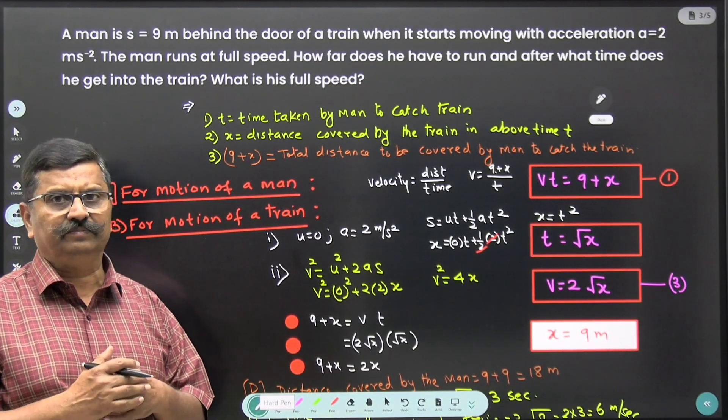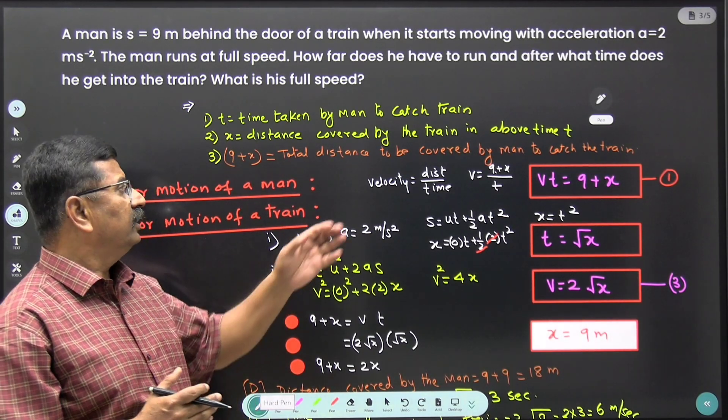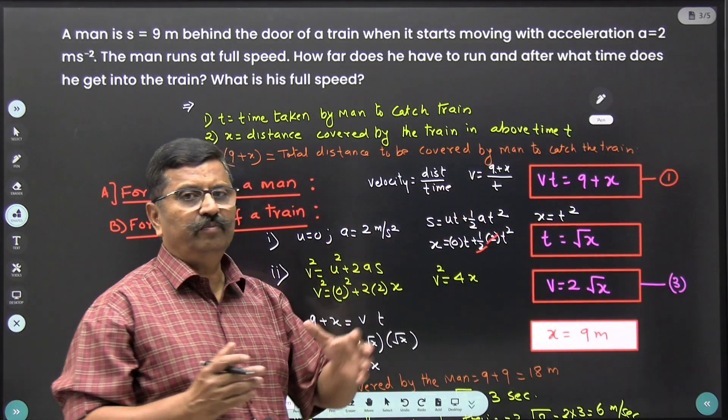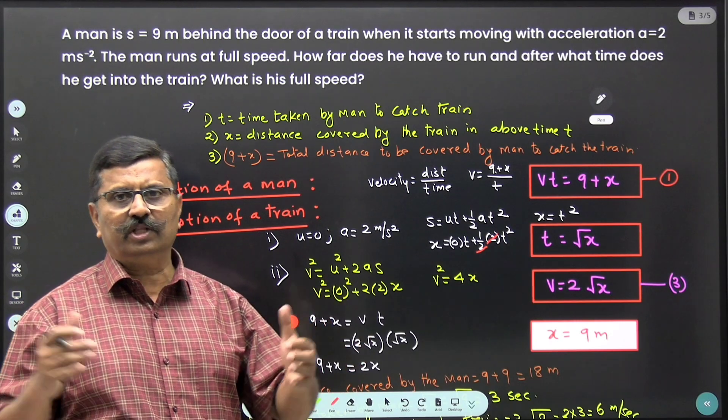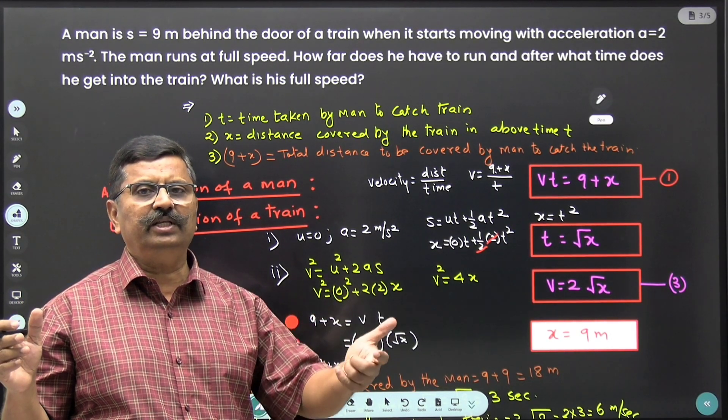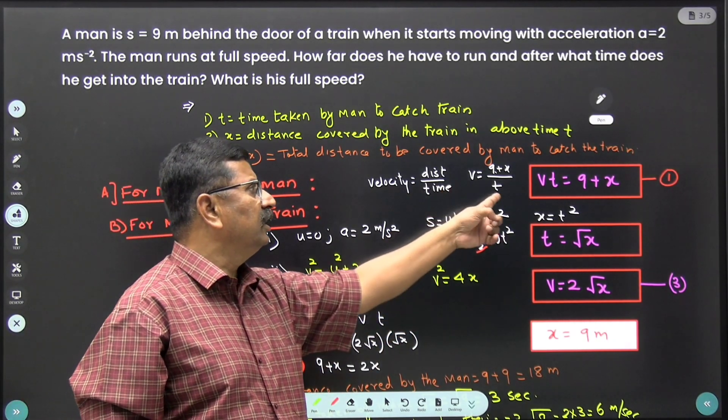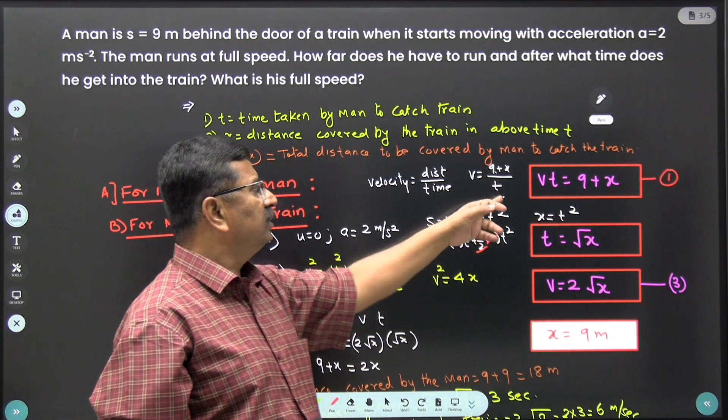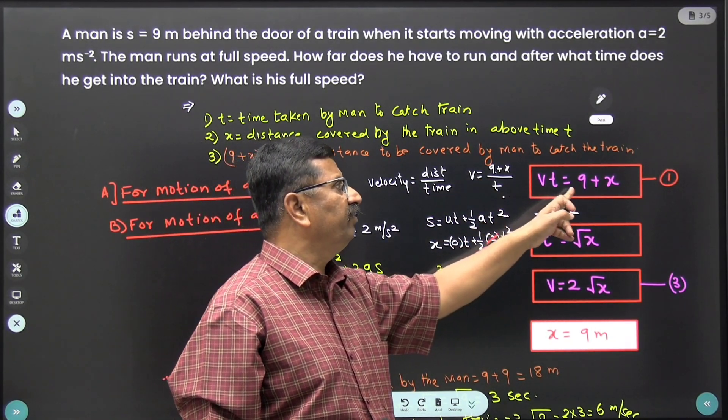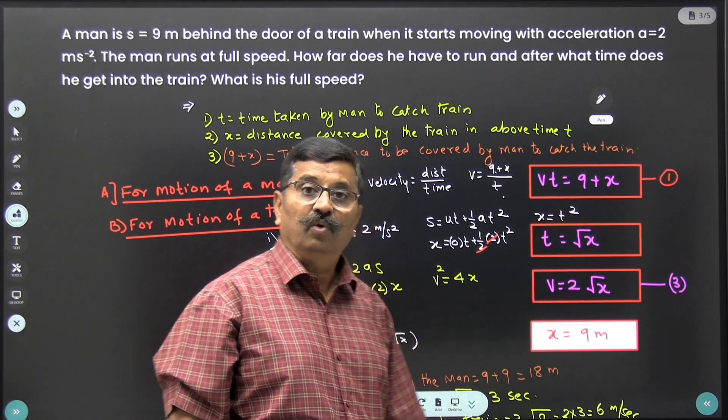First we will find out the motion of the man. Velocity is equal to distance upon time. Distance covered by the man is 9 plus x because already distance between train and the man is 9 meter. In time t seconds, train covers distance x. Therefore total distance is 9 plus x divided by t. So this t I will take it to this side. So I will get vt is equal to 9 plus x. We will call this as equation number 1.